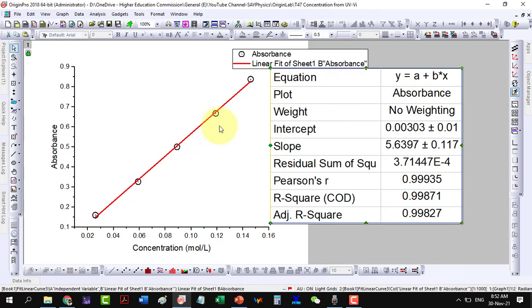Now, as our adjusted R-square value is close to 1, so we can note the value of y-intercept is y₀ equals 0.00303 and slope is m equals 5.6397.